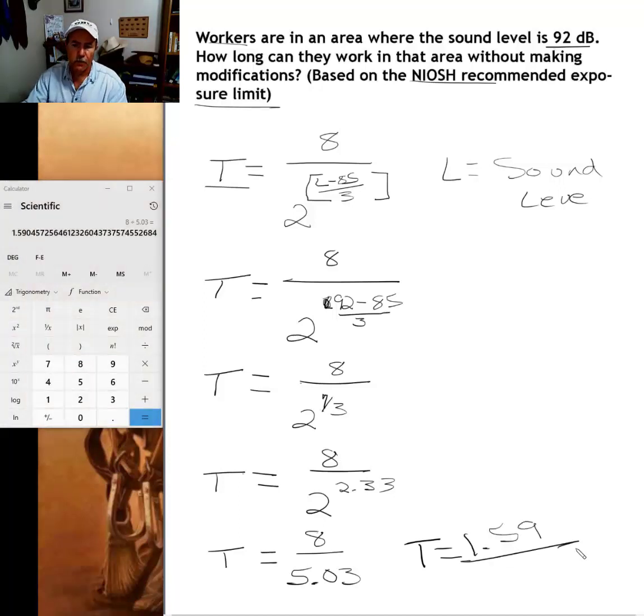1.59 hours. We're used to working in hours and minutes, so I'm going to convert the 0.59 hours to minutes. 60 minutes in an hour times 0.59 equals 35, so let's call that 1 hour 36 minutes.